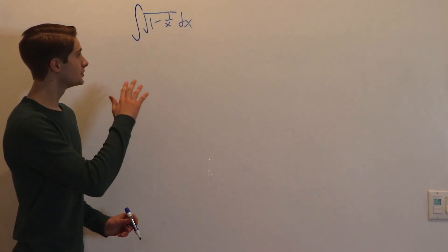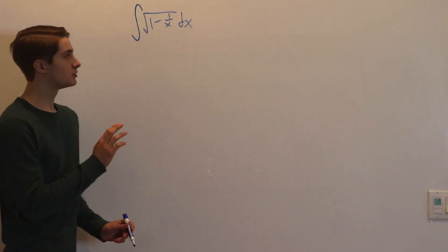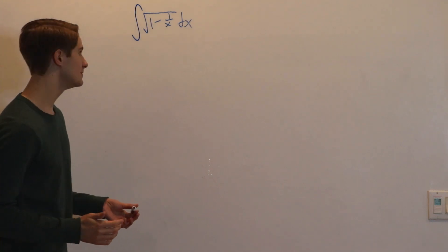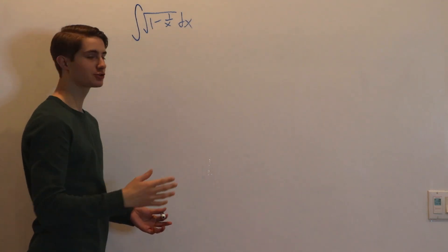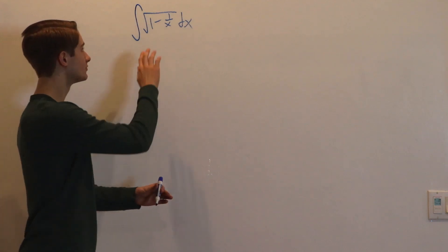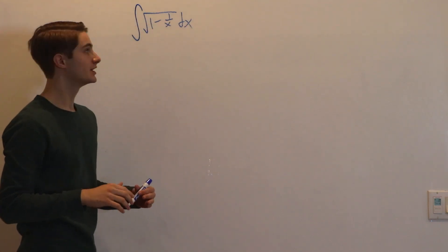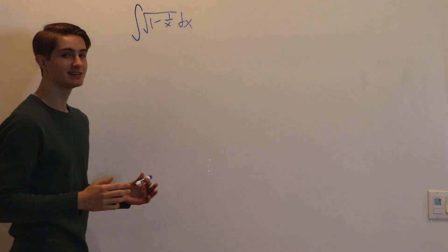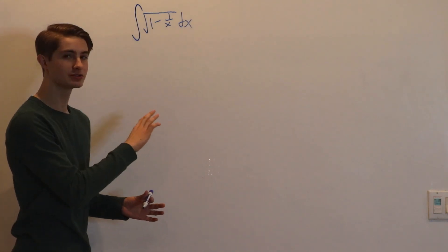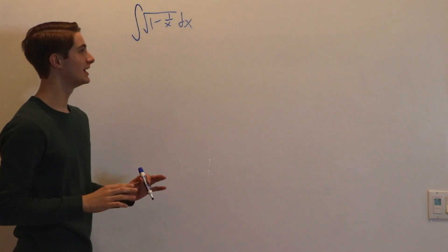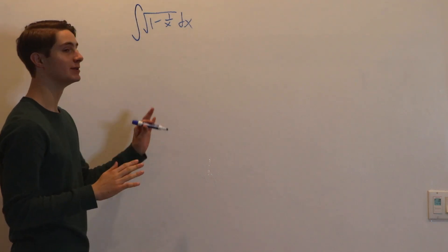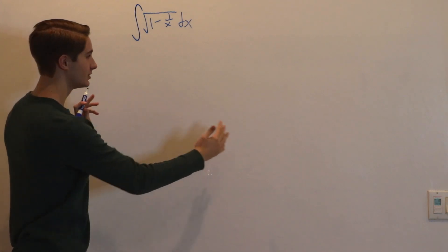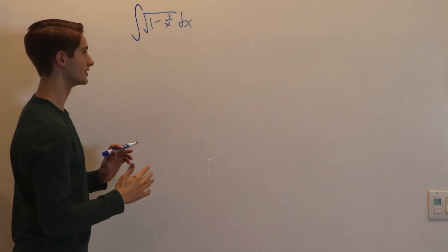We are going to integrate the square root of 1 minus 1 over x, dx. Now when you first see this integral, your instinct might be to let u equal the entire square root, square it, solve for x, figure out what dx is, and turn it into a rational expression, then try to integrate from there. But that's actually very difficult — it takes a very long time to get to something you can integrate, and your answer ends up really long and ugly.